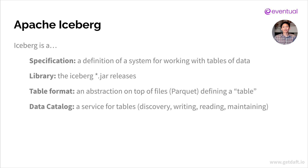So let me start with: what is Iceberg? People conflate a lot of different things about Iceberg. Because Iceberg, when you think of it, is actually a couple of different things. Number one, it's a specification. If you go to the Iceberg website, it will fully lay out a description of Iceberg — a definition of a system for you to work with tables of data. So if you have tables with rows and columns, each column has a type, and you want to work with them, especially in the cloud, you will use Iceberg on top of it. So it's a description of a system.